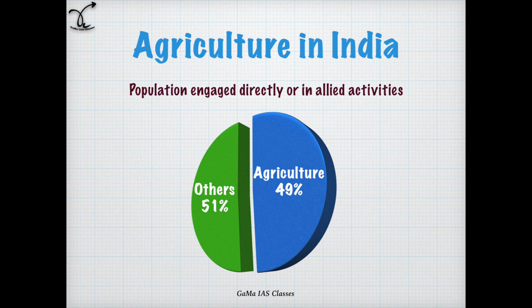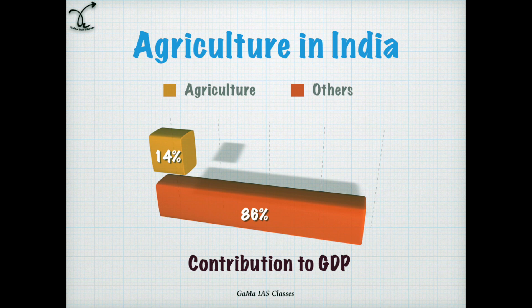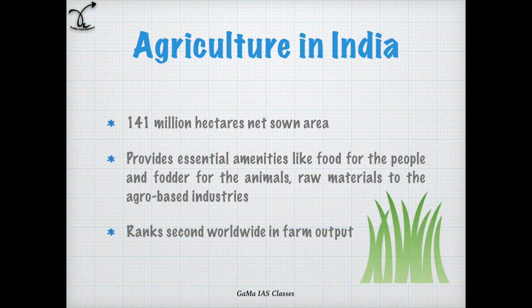Approximately 49% of the population in India is engaged directly or indirectly in agriculture and allied activities. Agriculture has a contribution of 14% towards GDP. 141 million hectare is the net sown area in India. It provides essential amenities like food for the people, fodder for the animals, and raw material to the agro-based industries. India ranks second worldwide in farm output.